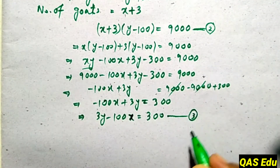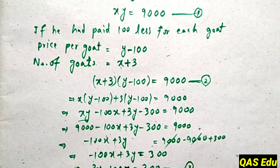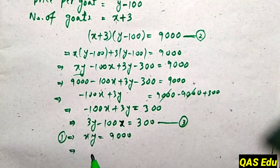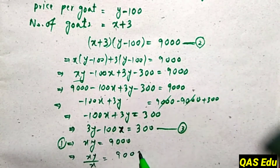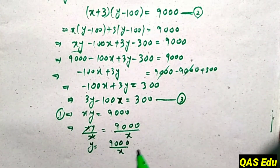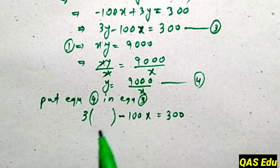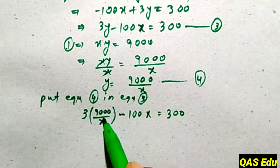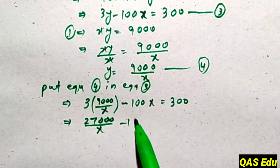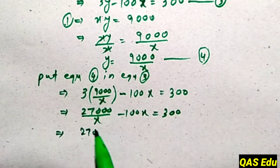From equation number one, xy = 9,000, so y = 9,000 divided by x — this becomes equation number four. Substituting equation four into equation three: 3 times (9,000 divided by x) minus 100x equals 300. This gives 27,000 divided by x minus 100x equals 300. Multiplying through by x: 27,000 minus 100x² equals 300x.